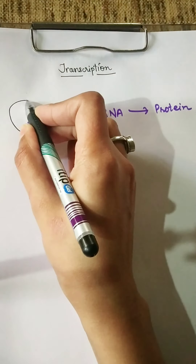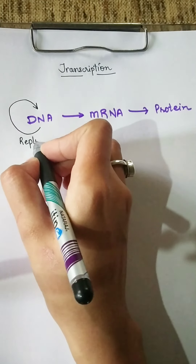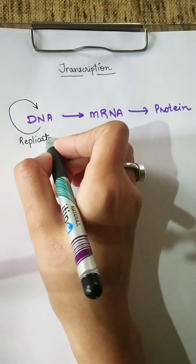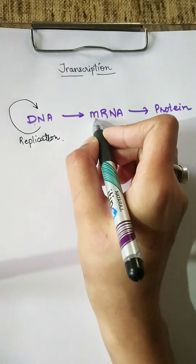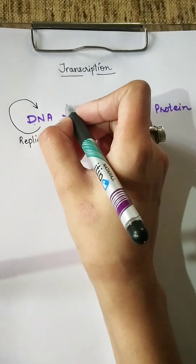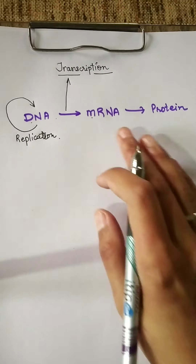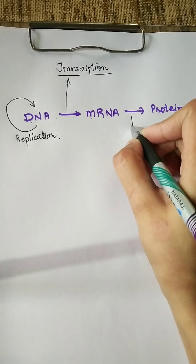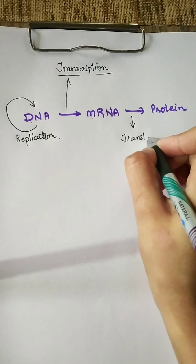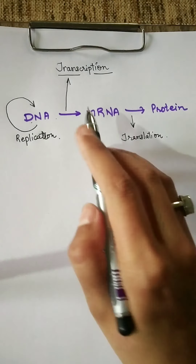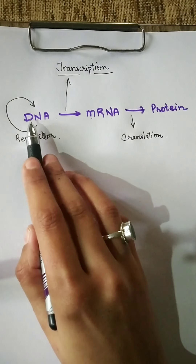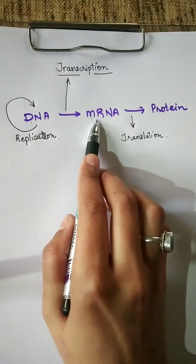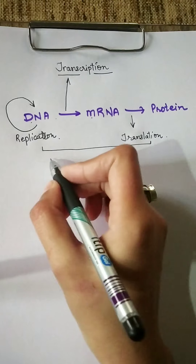So DNA — the first thing is that it replicates itself and makes its own copy. This is called replication. Then DNA changes into mRNA — this process is called transcription. When mRNA is changed into protein, this process is called translation, which we are going to discuss later. This whole process is called central dogma.